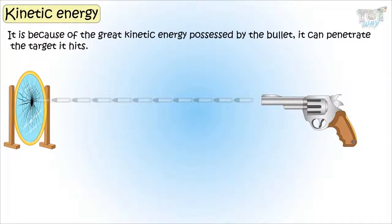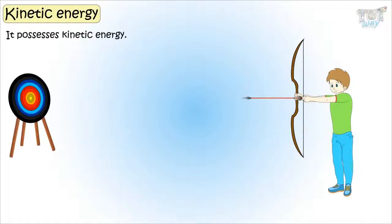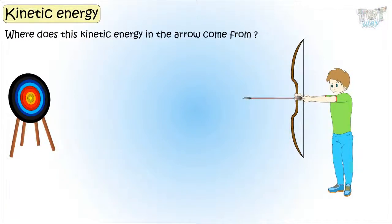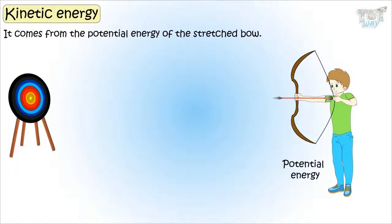It penetrates the target that it hits. A shooting arrow — what kind of energy does it possess? It has kinetic energy. But where does this kinetic energy in the arrow come from? It comes from the potential energy of the stretched bow. The bow possesses potential energy due to its position, which is a stretched position.